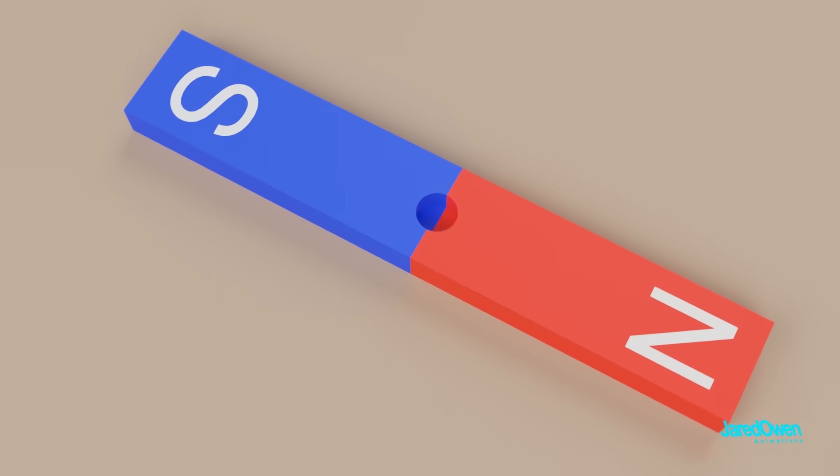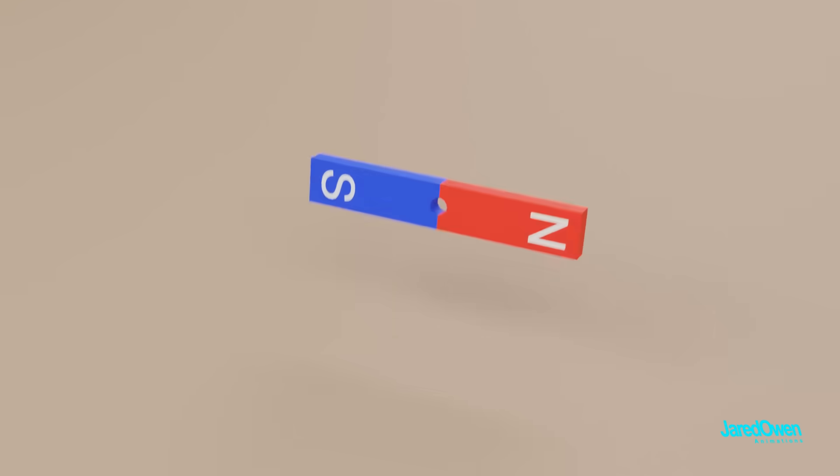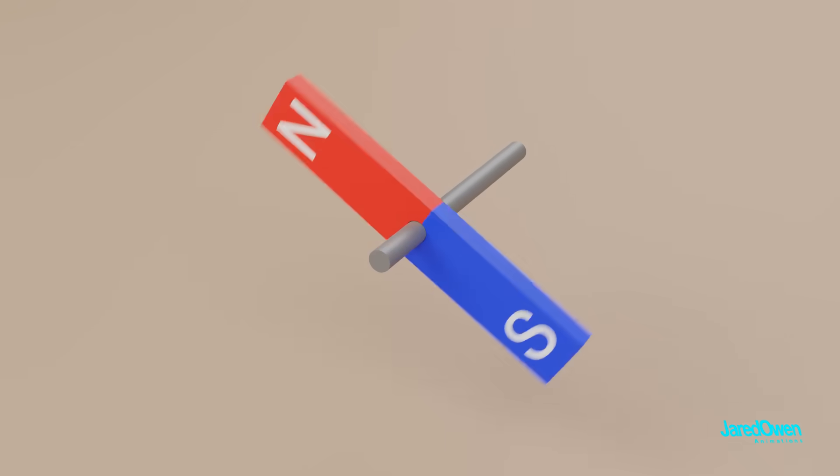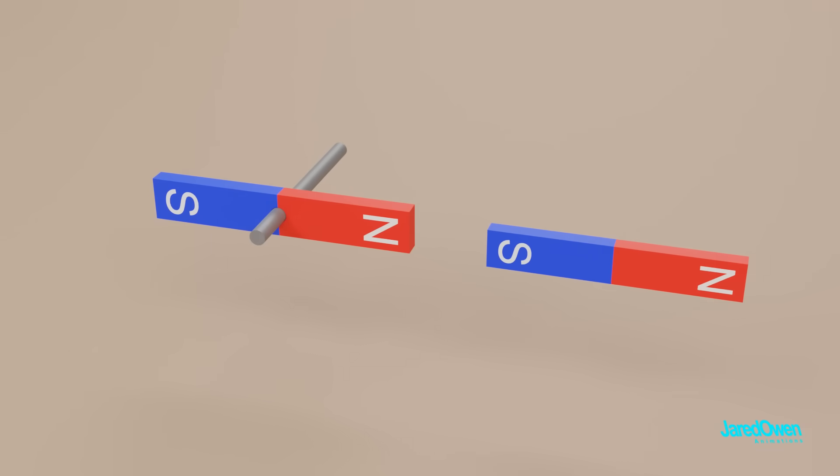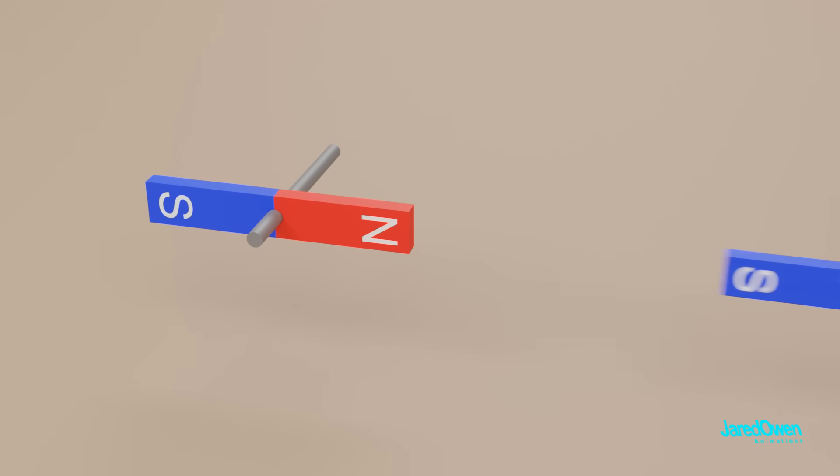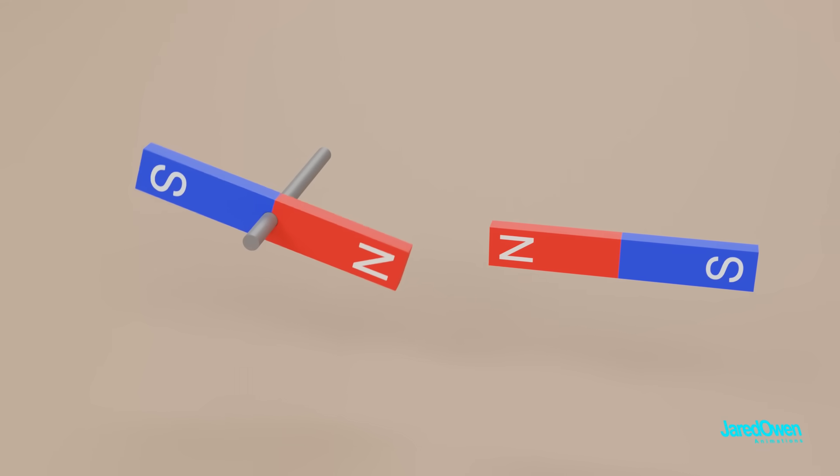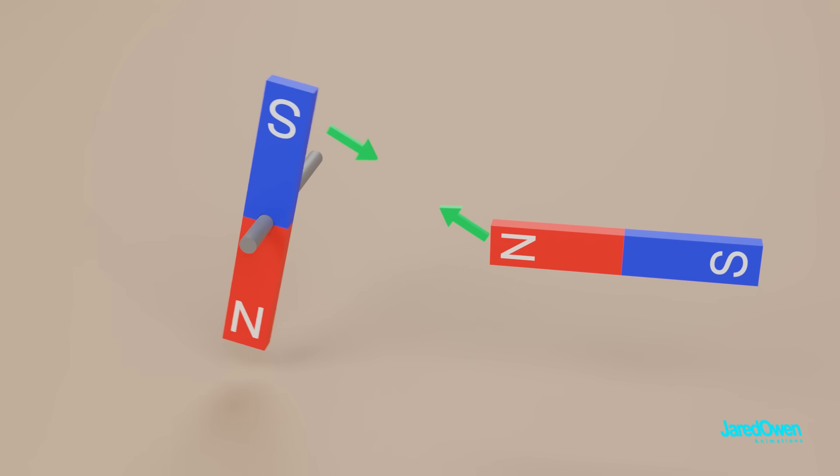Let's take one of our permanent magnets and drill a hole in the center and put it on something that will allow it to spin. Now bring another magnet towards it. Our spinning magnet will immediately line up until opposite poles are right next to each other. Now switch out the side magnet. The same poles repel and opposite poles attract.